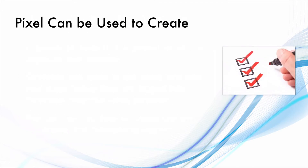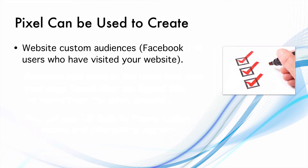The Pixel can be used to create website custom audiences — Facebook users who have visited your website or specific pages on it. For example, if I want to segment all the audience who is reading Facebook-related articles on my blog, I can do that. Or if I want to segment audiences based on whether they visited a contact us page or about me page, I can do that as well.